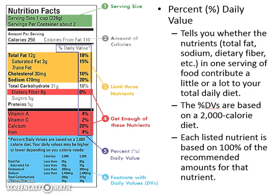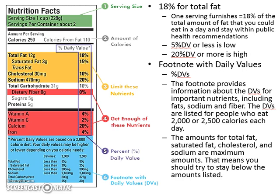Percentage daily value, number five — the percentage needs to total up based on a 2,000 calorie diet. If your diet calls for only 1,500 calories, those percentages will be too high because you're limiting your nutrients. Let's break it down: 18% for total fat means one serving equals 18% of what you should have for the day. A 5% daily value or less is considered low; 20% daily value or more is high. You'll need to look at Anna's nutritional analysis and tell me whether each value is high, low, or normal.